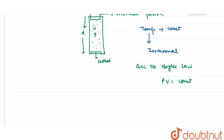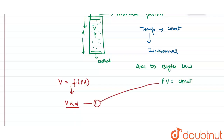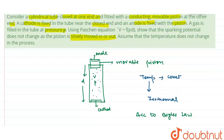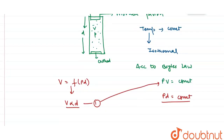According to the Paschen equation, volume is a function of pressure and d. From this, volume is proportional to distance d. Substituting into pV = constant gives pd = constant. This means at constant temperature the sparking potential is also constant, which proves that the sparking potential does not change as the piston is slowly moved in or out.